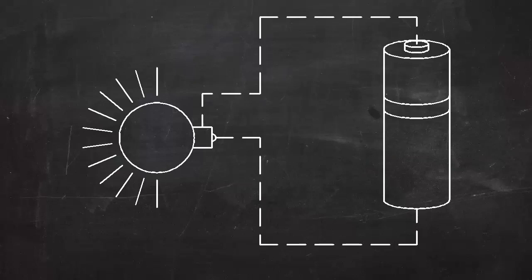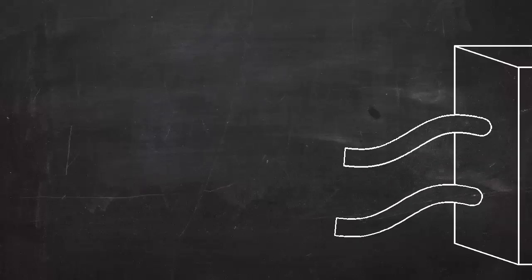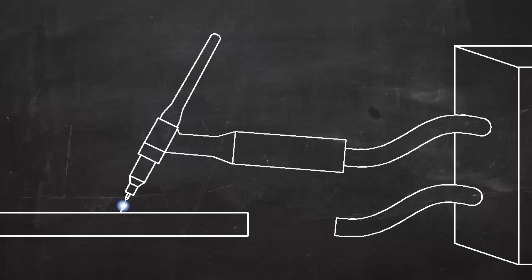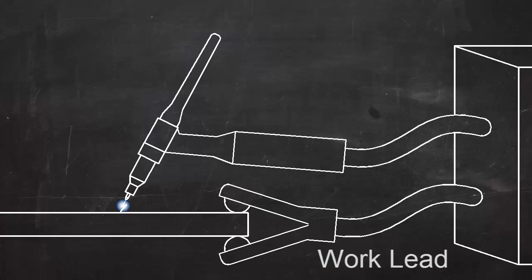In an electric circuit, the current flows in a loop. In TIG welding, the current has to flow in a complete circle from the machine, to the torch, into the work, and back to the machine. A work lead is clamped to the work to complete the circuit from the workpiece back to the machine.